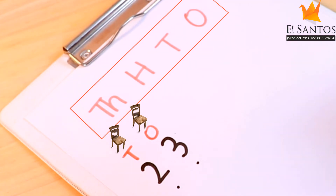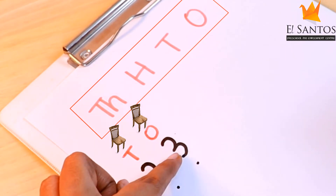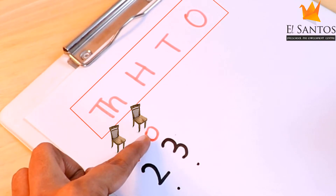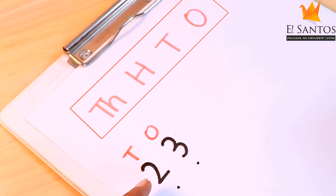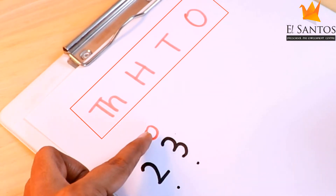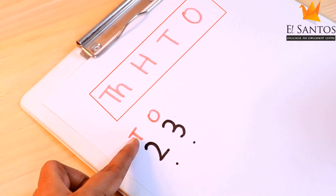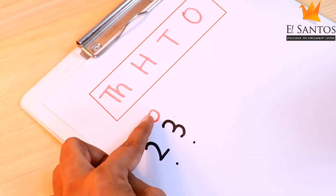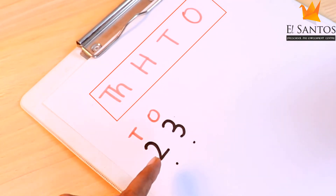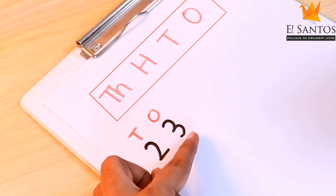Now let's read the number. There are two tens and three ones. Two tens are twenty and three ones are three. So we read it as twenty-three.